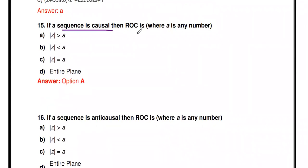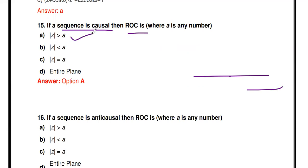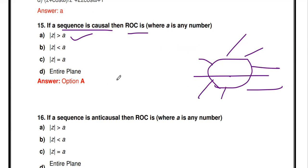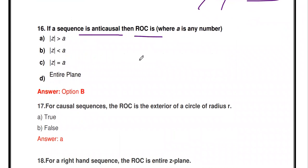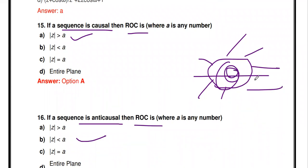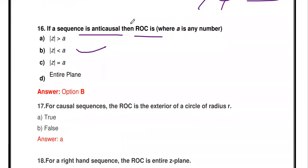If the sequence is causal, then the ROC is |z| > a — the exterior of a circle of radius a. A causal sequence has signal values only in positive time. For an anti-causal sequence, the ROC is |z| < a — the interior of the circle. An anti-causal signal is available in negative time only. So: causal → ROC exterior of circle; anti-causal → ROC interior of circle.